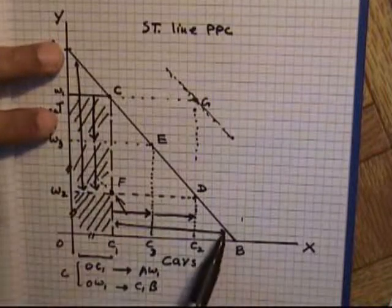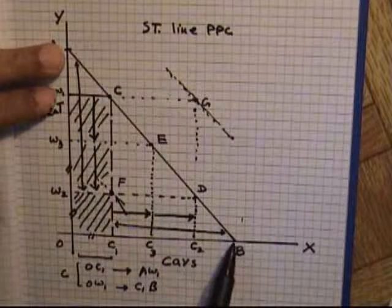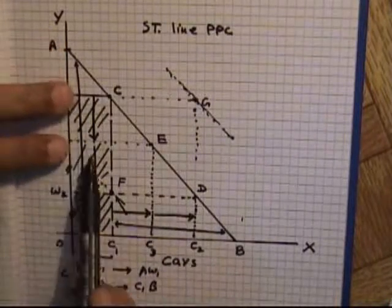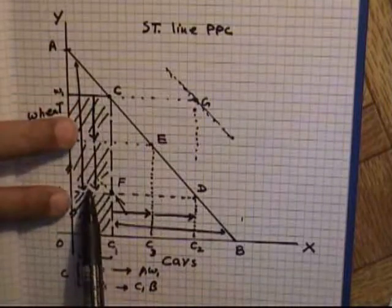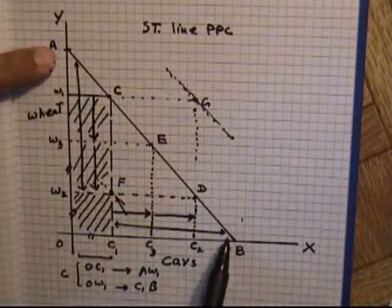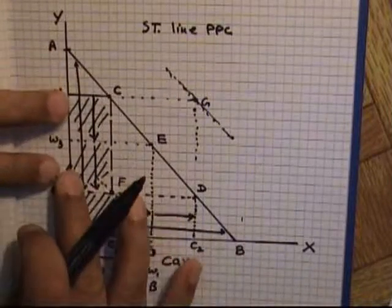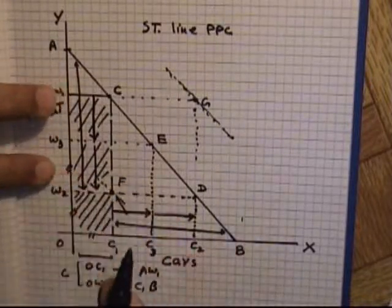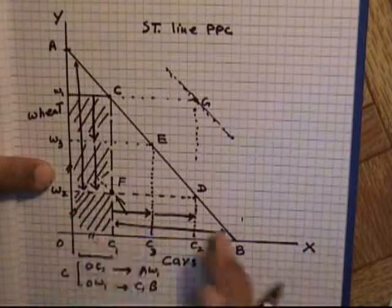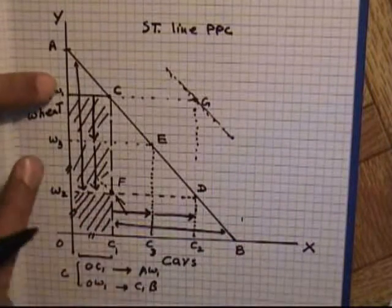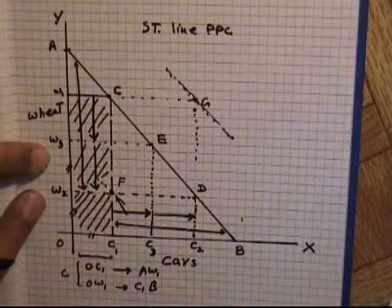If the production possibility curve is not straight, as we will see in other diagrams, this distance will change — it will not remain the same. The straight line production possibility curve explains constant opportunity cost: for every increase in the production of one commodity, the sacrifice of the other commodity remains the same.